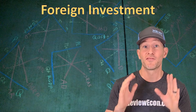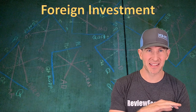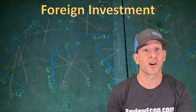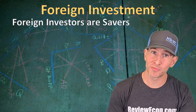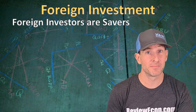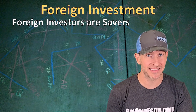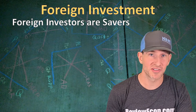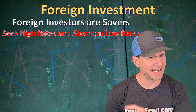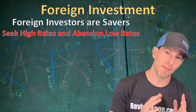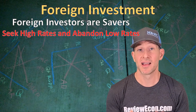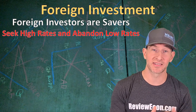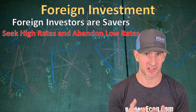In this unit, foreign investment means something completely different. Foreign investors are actually savers in our loanable funds markets — they purchase interest-bearing assets and save their money in U.S. banks. That means foreign investors are going to be seeking high interest rates and they are going to abandon low interest rates. Their financial capital flows to places where it can earn the highest interest rate.